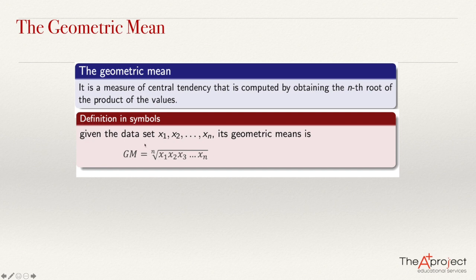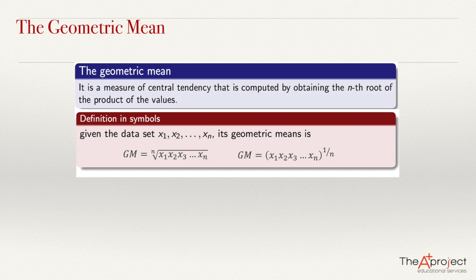In some calculators, when you cannot see the nth root symbol, you can raise this product to the power 1 over n. So another way to compute this is just multiply all the numbers and raise this product to the power 1 over n. The geometric mean is especially useful if you are going to compute the average percent increase of a quantity, if you know the percent increase of this quantity in consecutive periods.